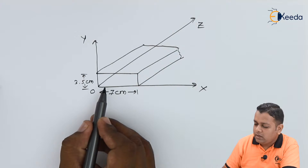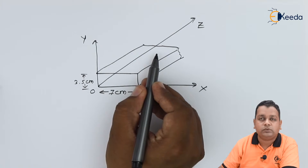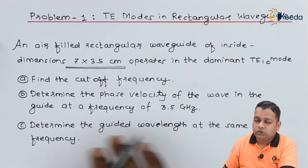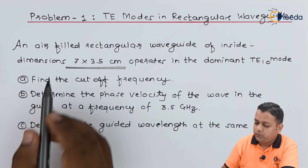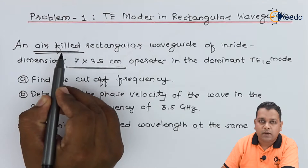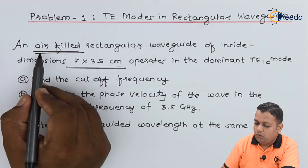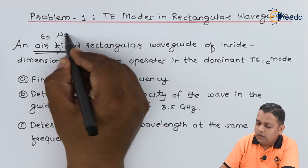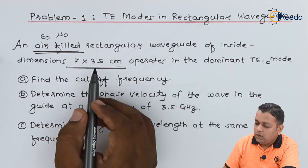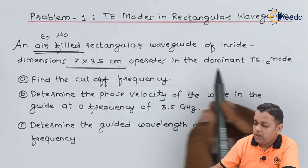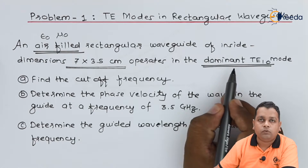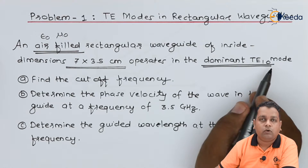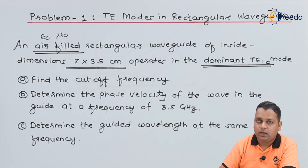We consider the direction of propagation of the microwave along the z direction. In this rectangular waveguide, the inner material medium is filled by air. For air, we have epsilon equal to epsilon-0 and mu equal to mu-0, the constant values. After air filling, the mode of propagation of the microwave is of the dominant type — transverse electric with coefficients m = 1 and n = 0, that is the TE10 mode.